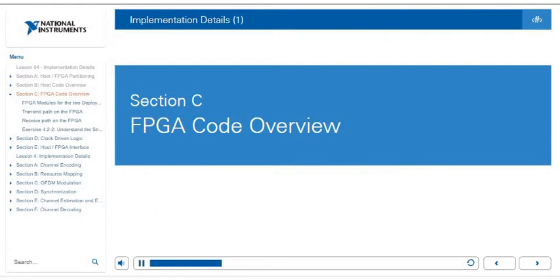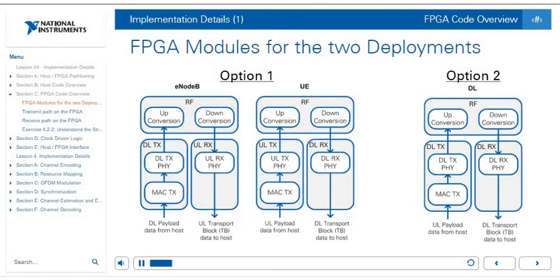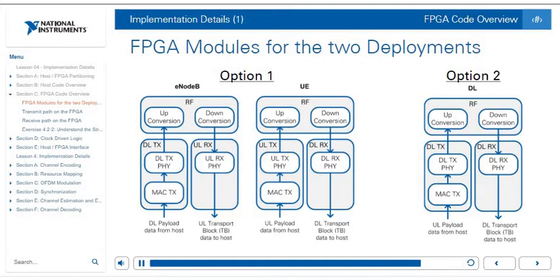In section C, we will go through an overview of the FPGA code in the LTE application framework. Recall that there are two different system configurations. The first option is when the eNodeB and the UE are on separate FPGAs. The second option is when the UE and the eNodeB are on the same FPGA, but only the downlink is implemented. In this case, there are three different FPGA bit files and therefore three different FPGA VIs. For simplicity, we'll look at what the FPGA VI looks like in the downlink, but the same general structure applies to all three.